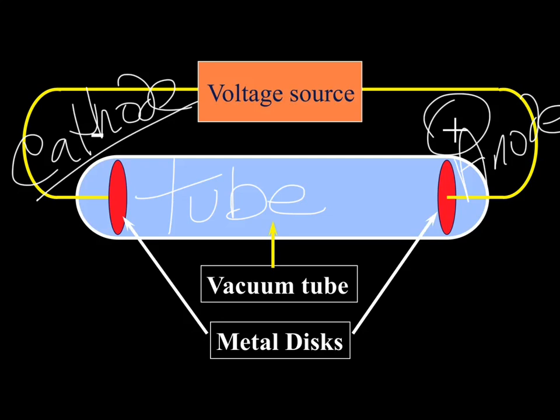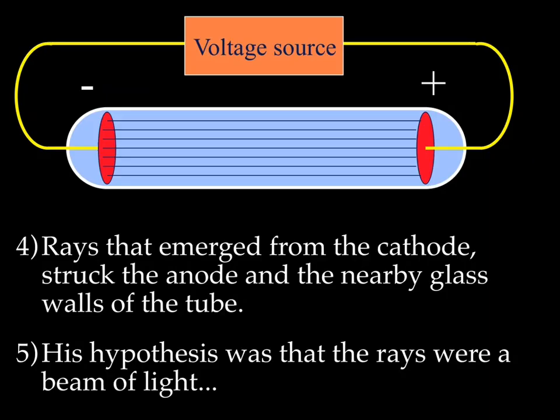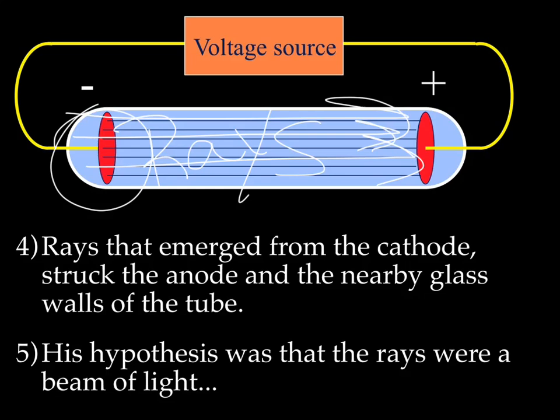He hooked this voltage source, this battery, up to these two plates, and what he saw were rays of light. Here are these rays. They're not necessarily rays of light, but they're these rays. Basically, the tube started to glow. Rays emerged from the cathode and went towards the anode. He had a hypothesis, and if you remember, a hypothesis is an educated guess. He thought that these rays were beams of light.